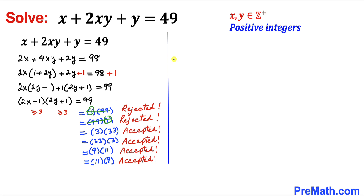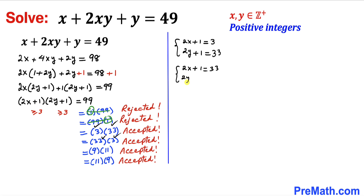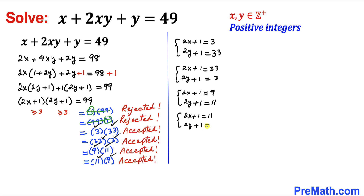The four valid scenarios are: first, 2x plus 1 equals 3 and 2y plus 1 equals 33; second, 2x plus 1 equals 33 and 2y plus 1 equals 3; third, 2x plus 1 equals 9 and 2y plus 1 equals 11; and finally, 2x plus 1 equals 11 and 2y plus 1 equals 9.